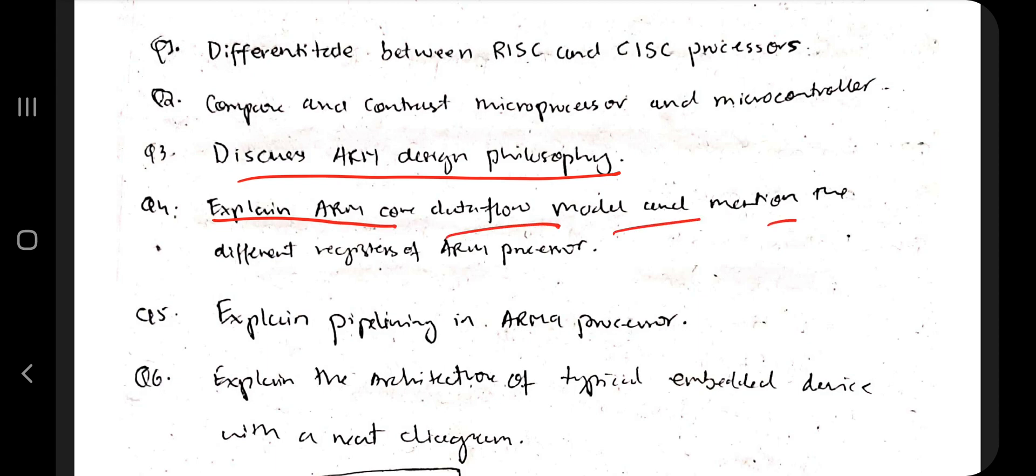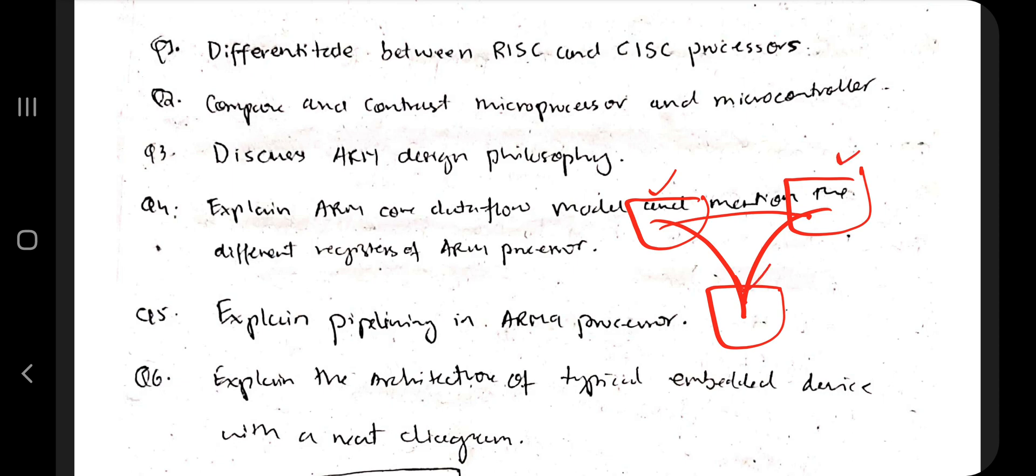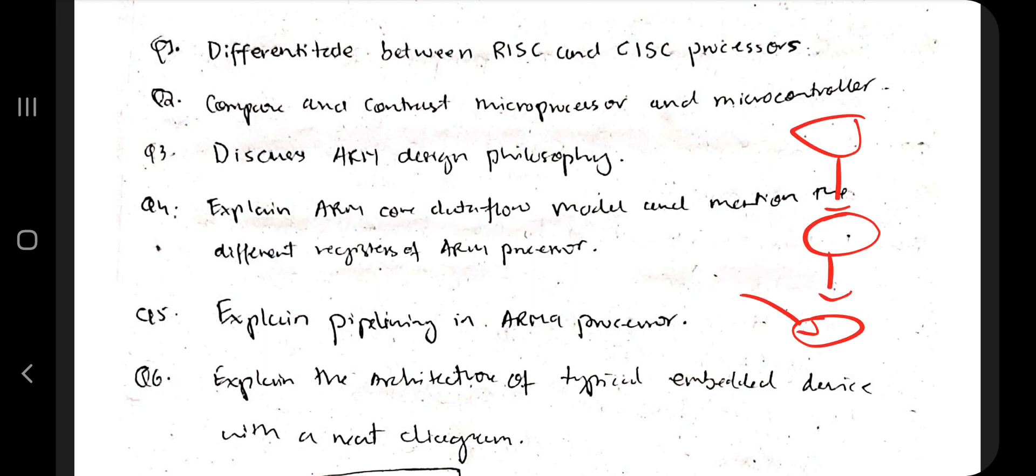Mention the different registers of the ARM processor. For the working of the ARM processor, there obviously needs to be storing data. For data storing and processing, we use different registers. What are its different register names? That is the first point you have to mention. The second is the data flow—first it will be loaded, then it will be processed, then it will be handled by some other request, and then the data will be sent to the output and displayed.